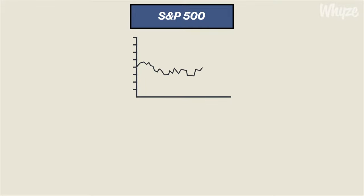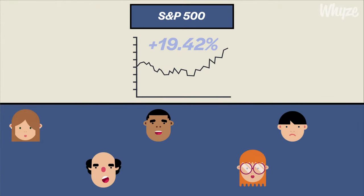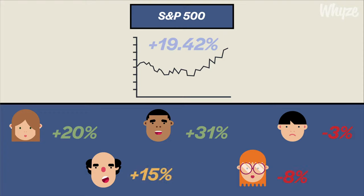The S&P 500 is one of the most important indices in the U.S. because both individual and professional investors use its performance as a gauge for the performance of their own stocks. For example, the S&P 500 increased in value by 19.42% in 2017, so a personal stock portfolio increase of 19.42% or higher would deem you a good investor for the year. Any personal gain below 19.42% would mean your stocks did not perform as well as they could have.